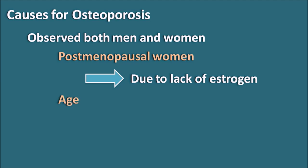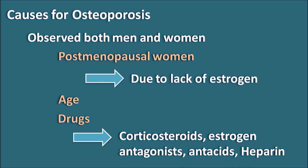Osteoporosis can also be observed with the progression of age in both men and women. As age progresses, there is a gradual loss of bone mass due to demineralization and increased osteoclast activity. Additionally, some drugs used long-term can produce osteoporosis, particularly glucocorticoids like prednisolone, estrogen antagonists like tamoxifen used for breast cancer, antacids and proton pump inhibitors used for GERD, and heparin, an IV anticoagulant when given for a longer period.